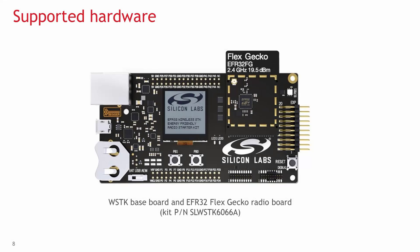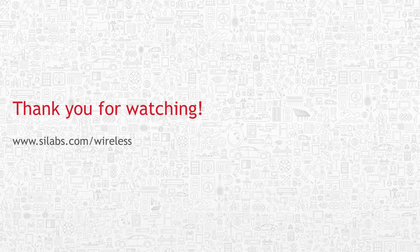The initial release of RAIL supports the EFR32 wireless Gecko portfolio, primarily focused on the Flex Gecko family of 2.4 GHz proprietary wireless SoCs. The 2.4 GHz EFR32 FG development kit is available to order now, and additional support for other hardware will be available in phases as new hardware becomes available. Thanks for watching!